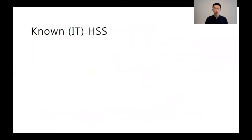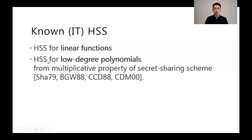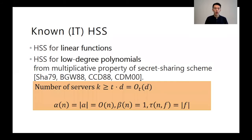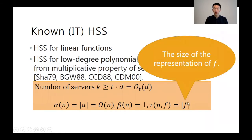Compared to the success in the computational world where we have fully homomorphic encryption, there are very few known IT-HSS schemes in the literature. First, we have HSS for linear functions which follow from any linear secret sharing scheme. We also have HSS for functions represented by low degree polynomials, which follow from multiplicative properties of secret sharing schemes such as Shamir or CNF sharing. The number of servers in such a scheme must scale linearly in the degree, which is not ideal since we want constant number of servers. Note that the representation size is usually correlated with the computational complexity of f.